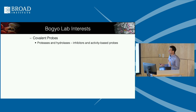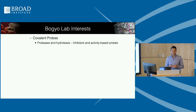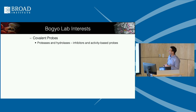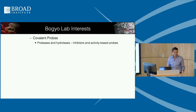The targets we've worked on quite a bit are proteases and hydrolases — enzymes that use a nucleophilic attack mechanism to hydrolyze a bond, whether an amide, an ester, or thiol esters. It's pretty broad. Proteases and hydrolases make up about one to five percent of the genome of most organisms, so they're very prevalent and do lots of different things.